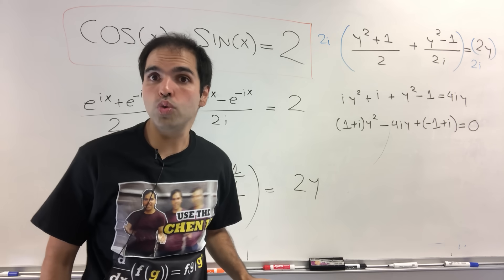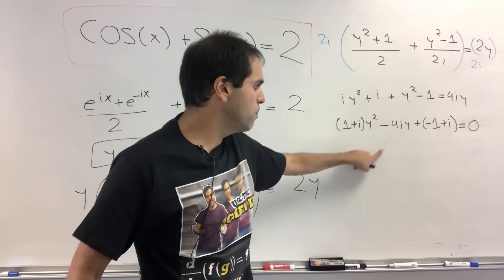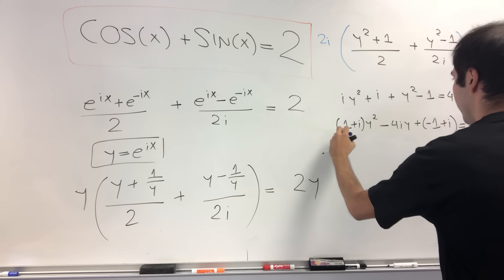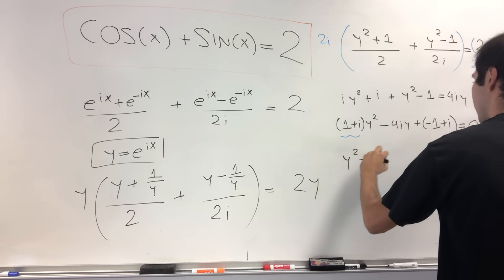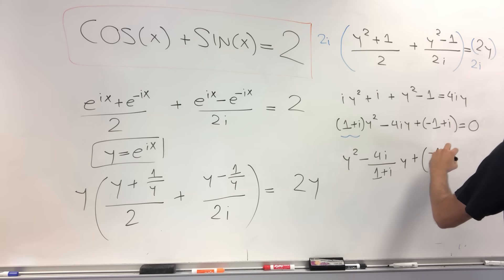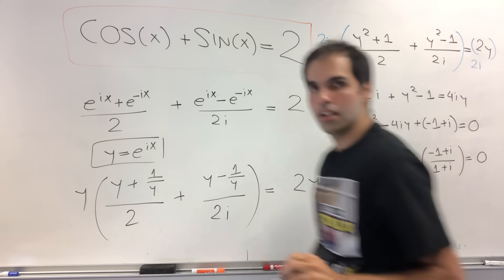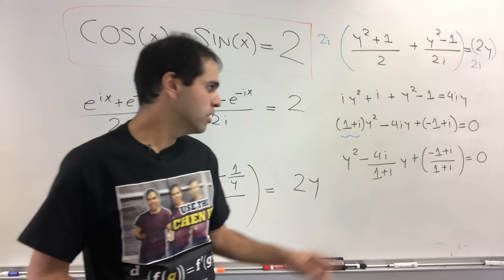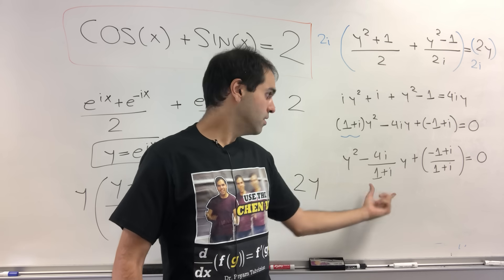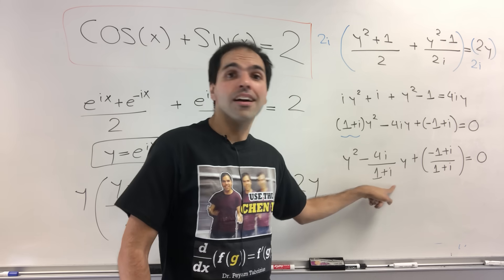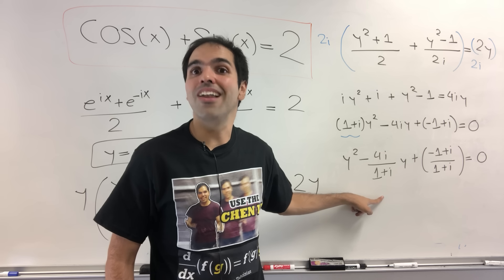Now, you could use the quadratic formula for this, but let's actually simplify this a little bit by making the leading coefficient 1. So let's divide by 1 + i, and then what we get is y² minus 4i/(1 + i) y, and then plus (-1 + i)/(1 + i) equals 0. Now, your calculus teacher, or black pen, red pen, may have rightfully told you, I don't like i on the bottom.